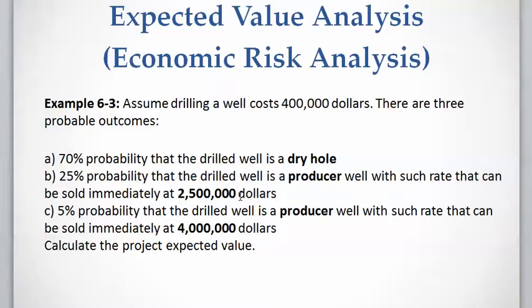Let's work on this example. Assume a drilling well that costs $400,000 and there are three possible outcomes. There is a 70% probability that we get a dry hole, which means there will be no revenue — just the cost of $400,000 at the present time.